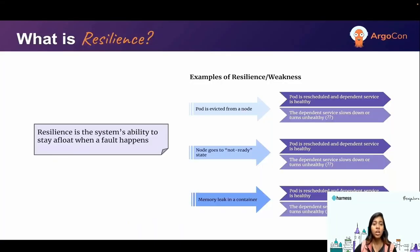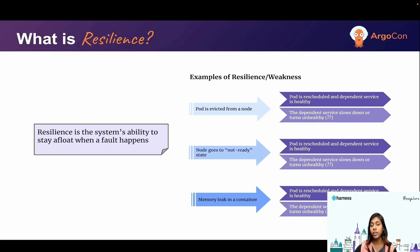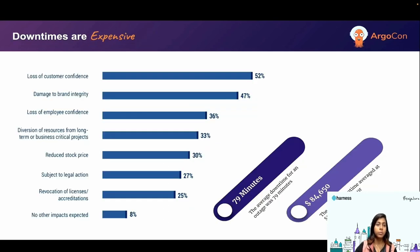To start off, we need to know what resilience is. Resilience is basically a system's ability to sustain a fault and bring itself back up. For example, if a pod gets evicted from a node, is its state healthy or not? If it is healthy, then it is resilient. The time period between going down and bringing itself back up is called resilience.